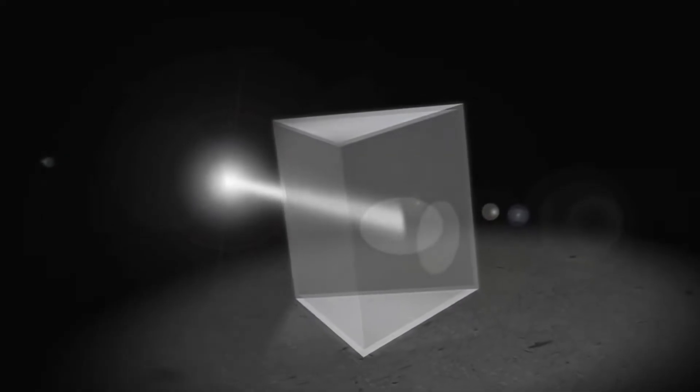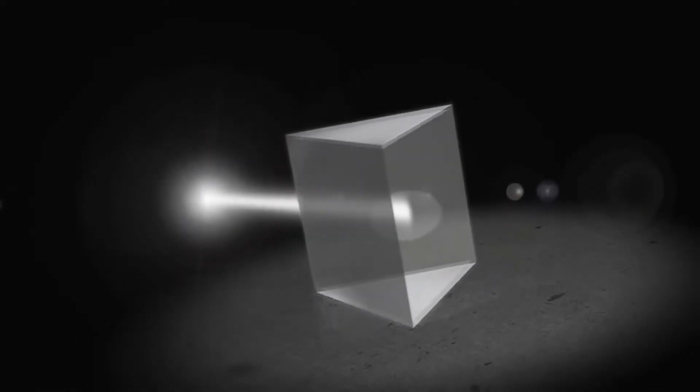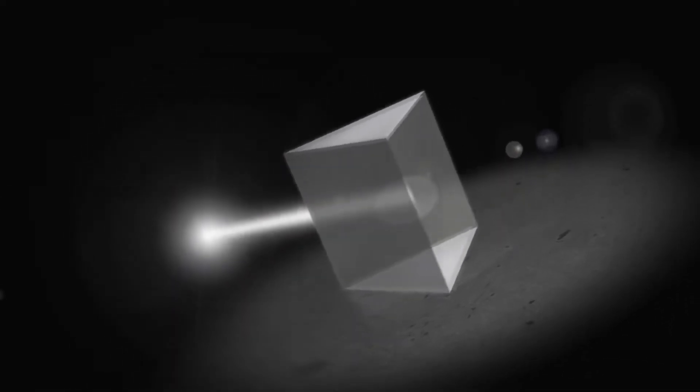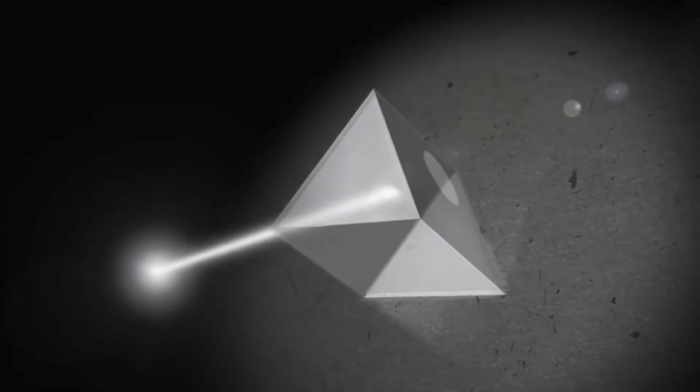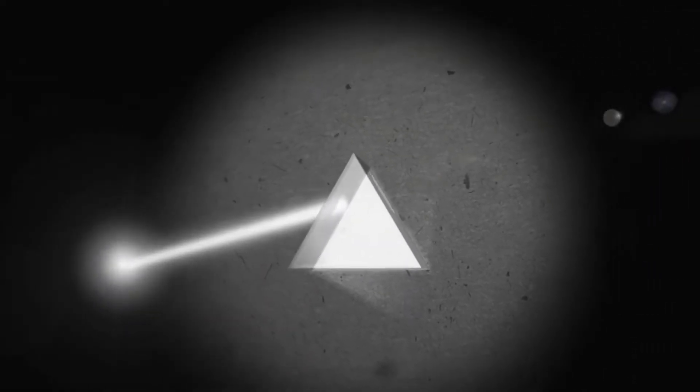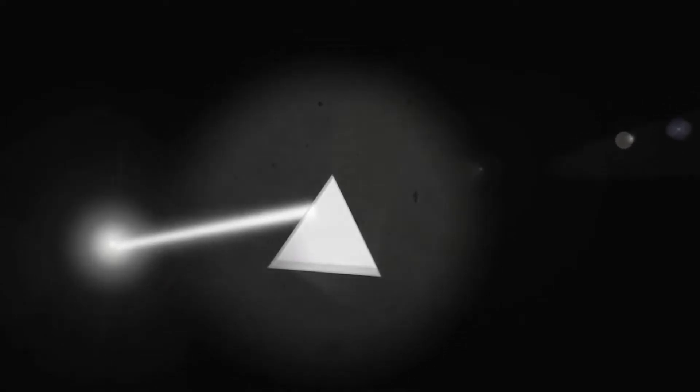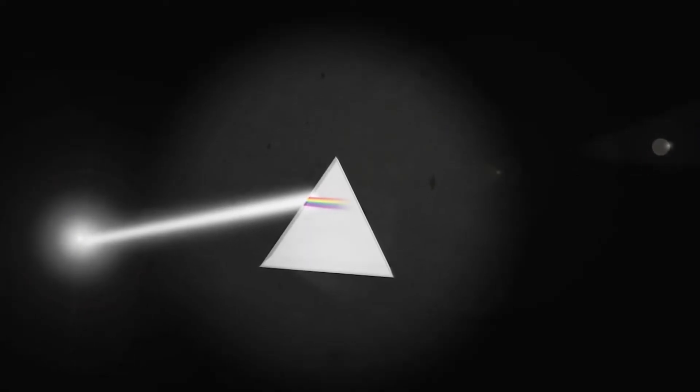This is a beam of white light, and this is a prism, a transparent medium. When a beam of white light falls on the surface of the prism, it is split into seven colors: violet, indigo, blue...